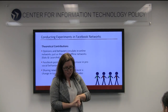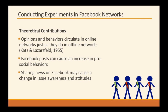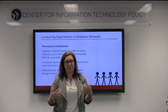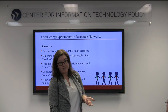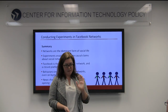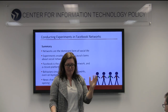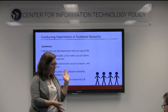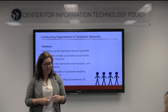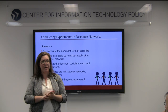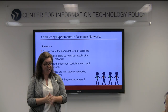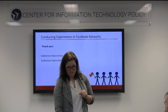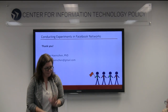In terms of theoretical contributions, we see that opinions and behaviors circulate in online networks just as they do in offline networks. We know that Facebook posts can actually cause an increase in voting when using social pressure messaging, and that sharing news may actually have an effect on opinions and issue awareness. To wrap up: networks are the dominant form of social life, and we should do experiments in them — especially on Facebook because everyone is using it. So far, I have managed to show that voting behaviors circulate in Facebook networks, reminding people to vote is powerful enough to work even on onlookers, and it looks like news sharing may heavily influence awareness of issues and opinions. Thank you — I look forward to your questions.